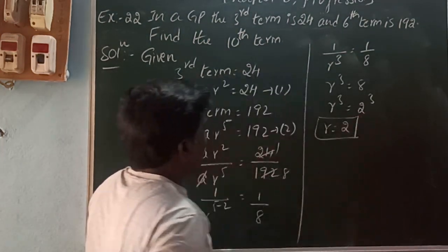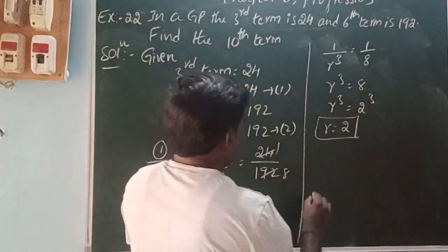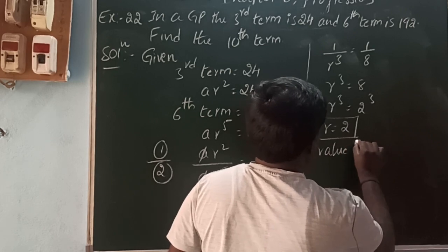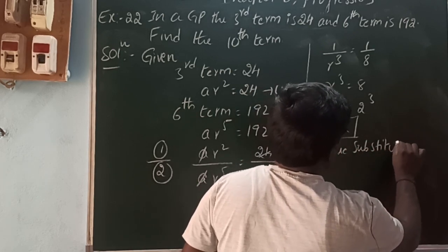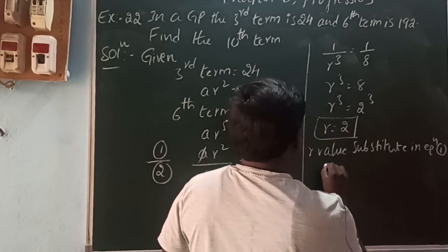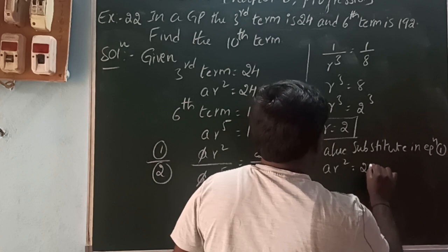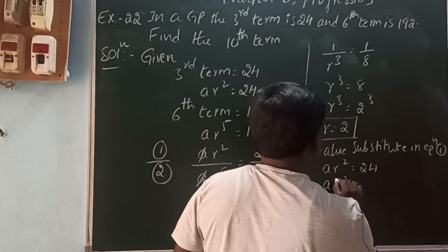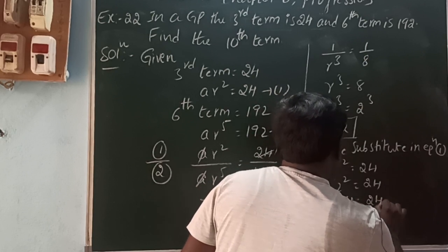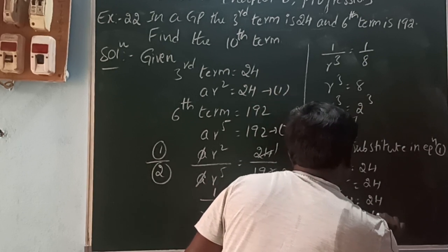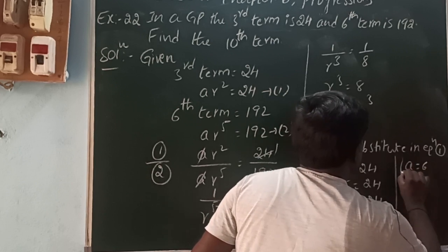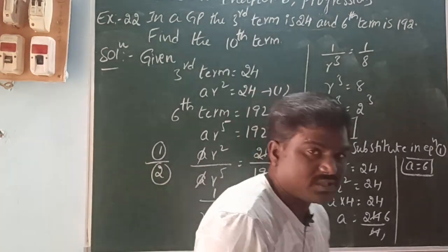Now substitute r = 2 into equation 1: a·r² = 24. So a·2² = 24, meaning a·4 = 24, giving a = 24/4 = 6. The first term a is equal to 6.